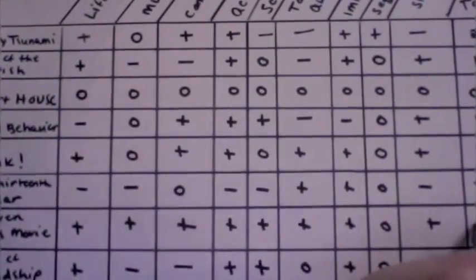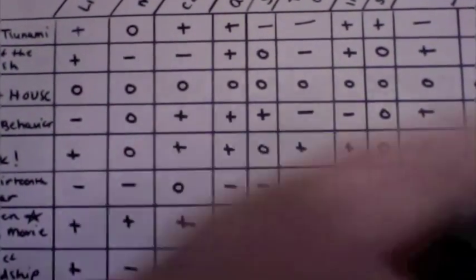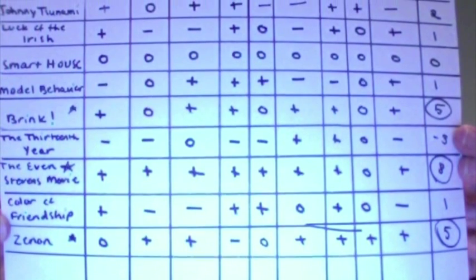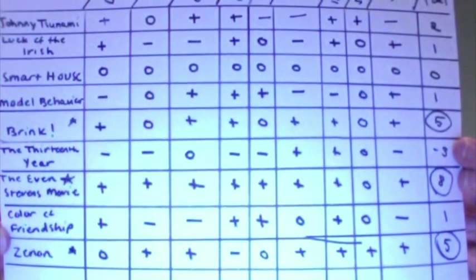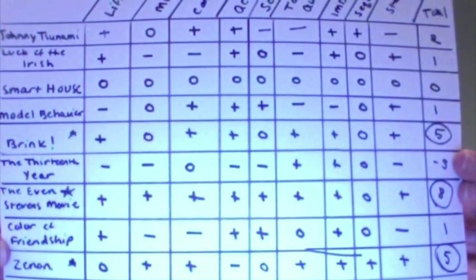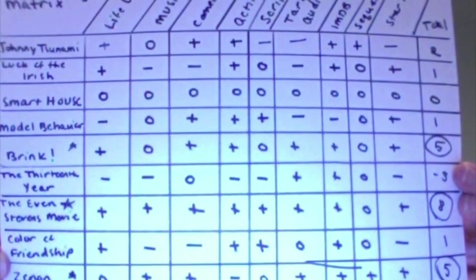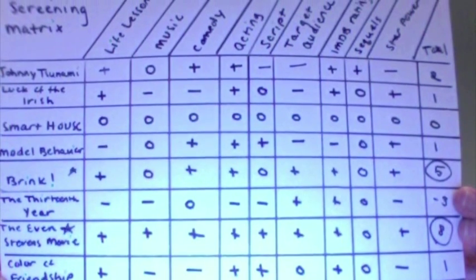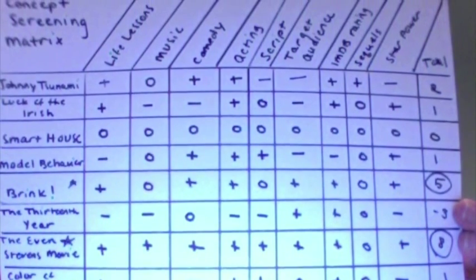We then sum the results to determine the concept with the highest score. It is important to keep in mind, however, that because of the abstract nature of the screening matrix, these totals do not absolutely represent the best concepts. No weights are assigned to the criteria, and the entire process is very subjective.